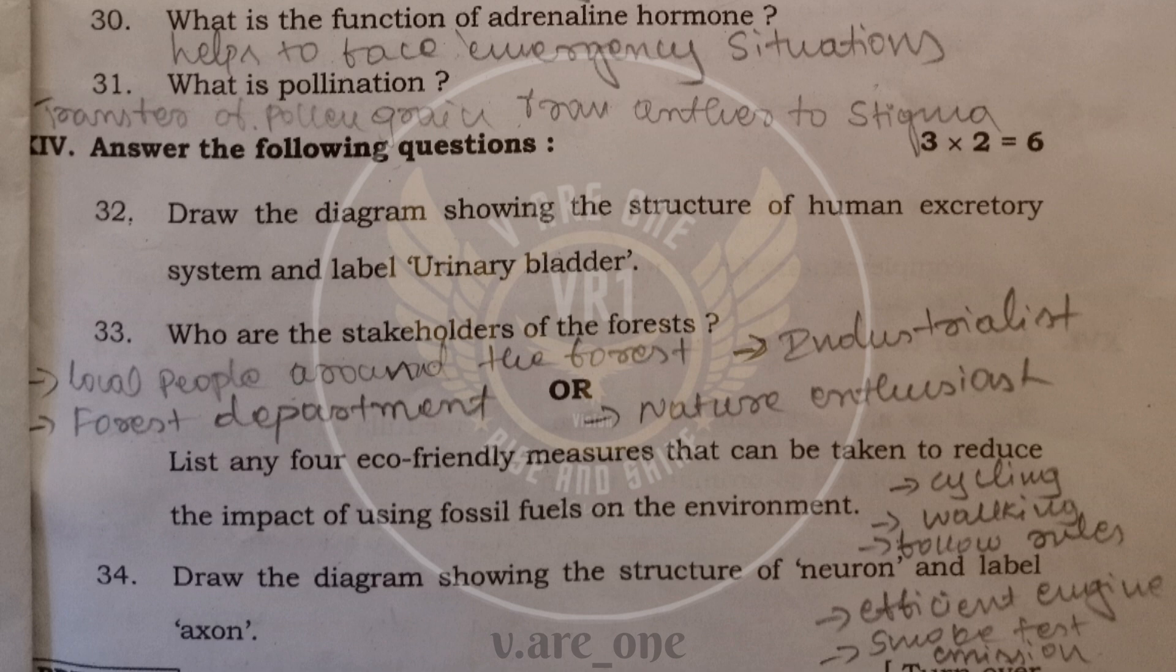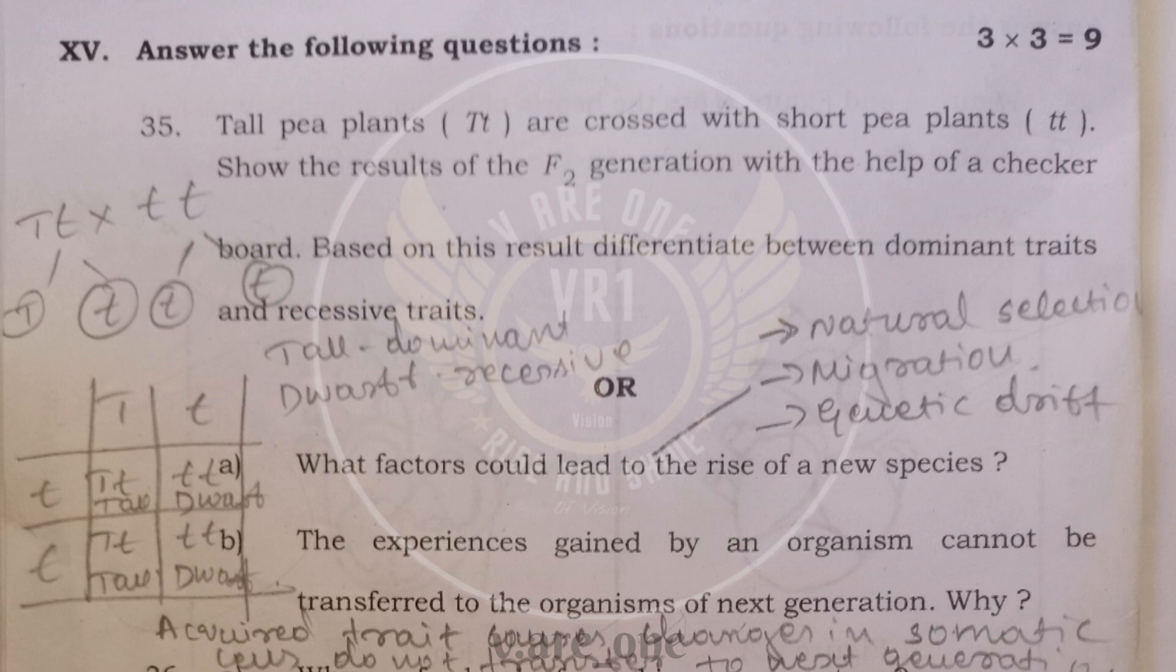And 34th, you have to write the diagram of neuron and label the part of axon. 35th question, you need to cross between tall pea plant, which is having capital T and small T, and dwarf plant having both small T. And you have to write the checkerboard. And here, tall is dominant and dwarf is recessive.